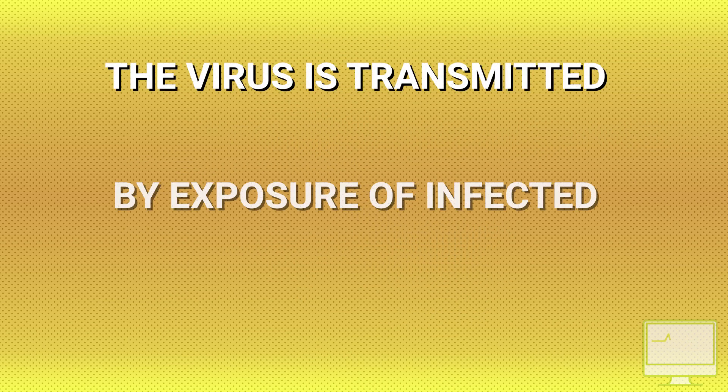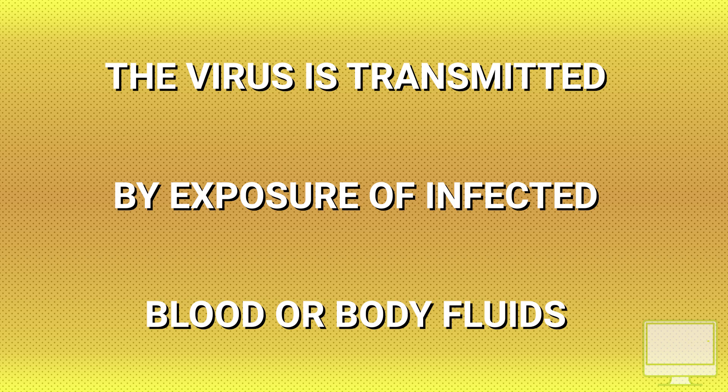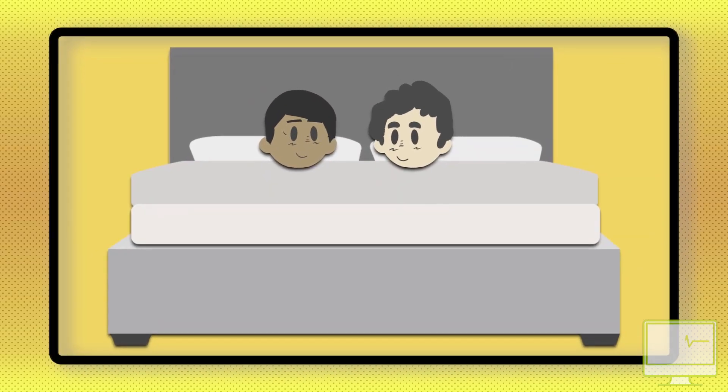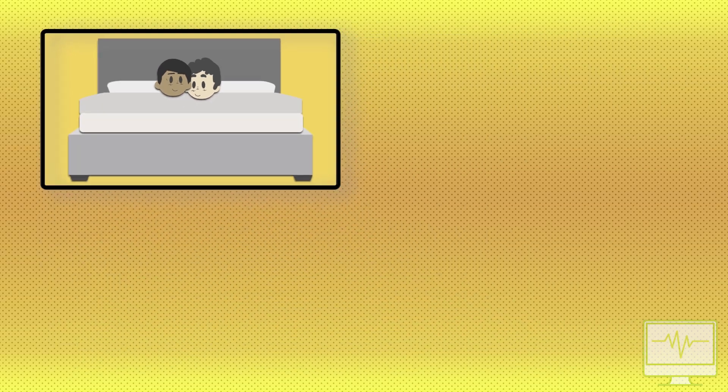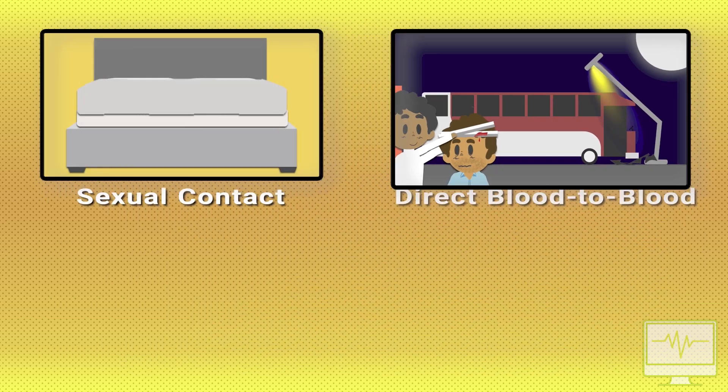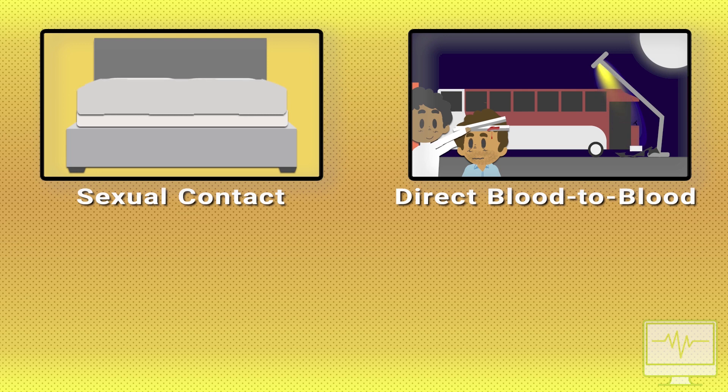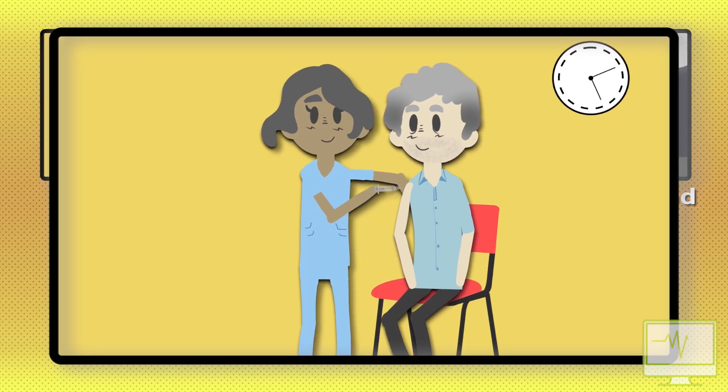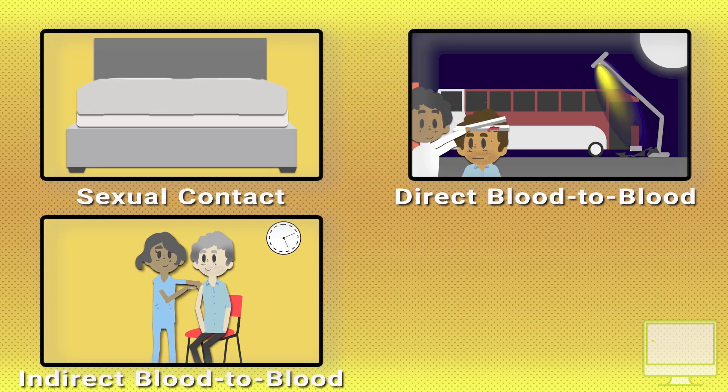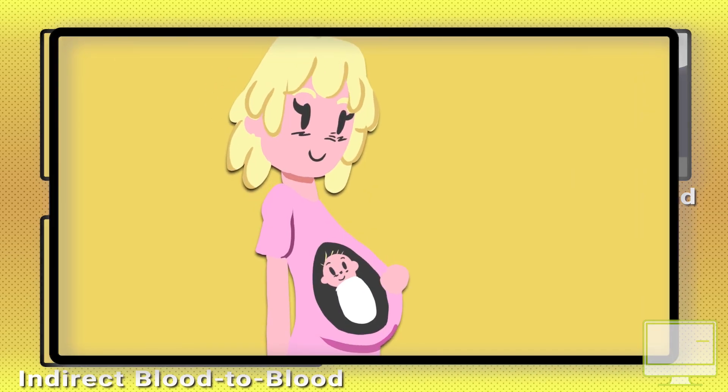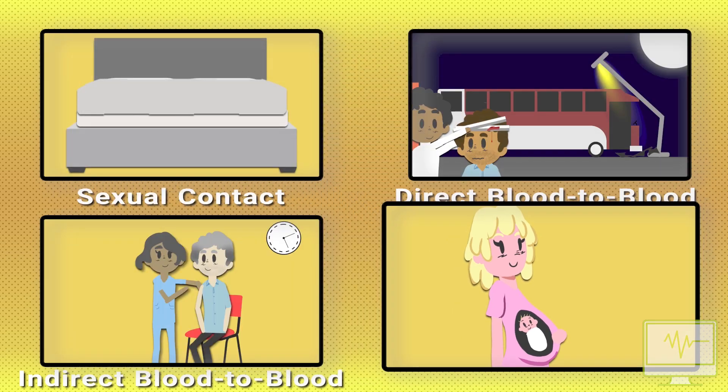Transmission route: The virus is transmitted by exposure to infected blood or body fluids, mostly through sexual contact, direct blood-to-blood contact via open wounds, indirect blood-to-blood contact via objects such as needles, and through perinatal transmission from mother to child.